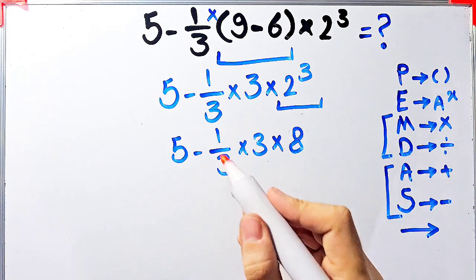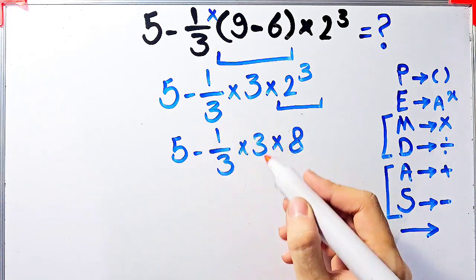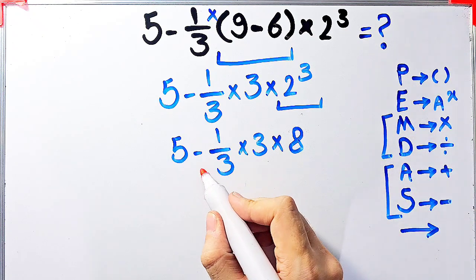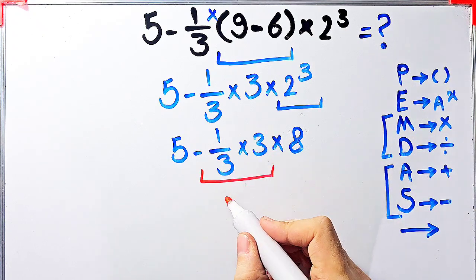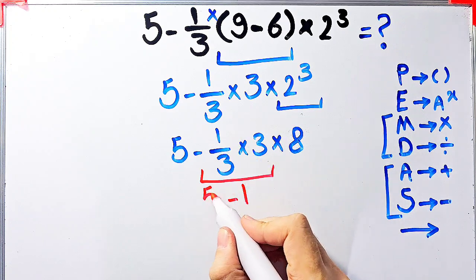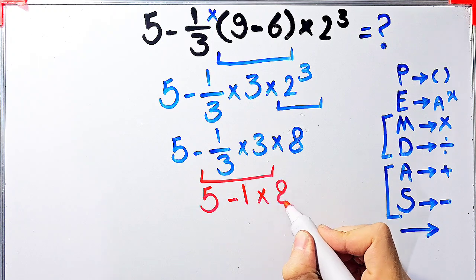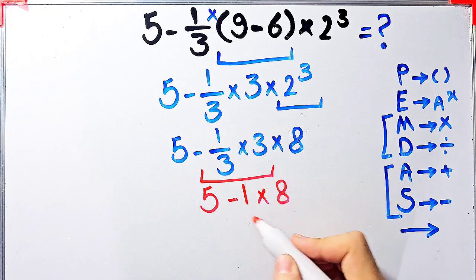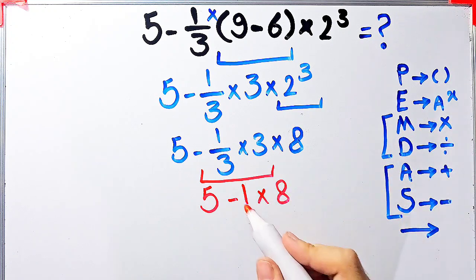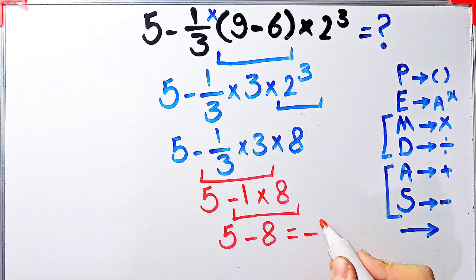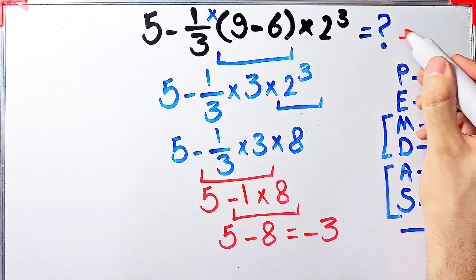Now we have subtraction and multiplication. First, we simplify this multiplication because multiplication has higher priority than subtraction. Negative 1 over 3 times 3 equals negative 3 over 3, which equals negative 1. Now the question is 5 minus 1, then times 8. Again, we have subtraction and multiplication, so we do the multiplication first. Negative 1 times 8 equals negative 8. Now we have 5 minus 8, and 5 minus 8 equals negative 3. The final answer of this question equals negative 3.